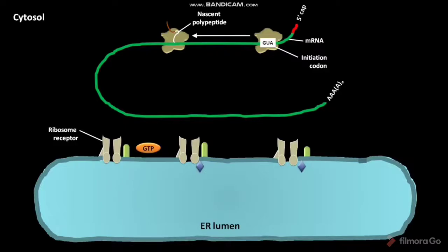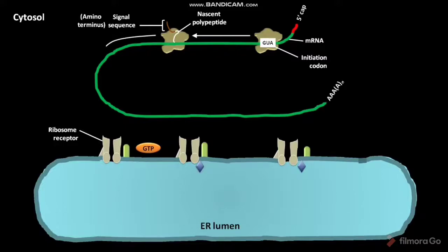This nascent polypeptide chain has a signal sequence. This signal sequence appears early in translation because the signal sequence is present at the amino terminus of the nascent polypeptide. As translation proceeds, the length of the nascent polypeptide chain increases with the emergence of the signal sequence.